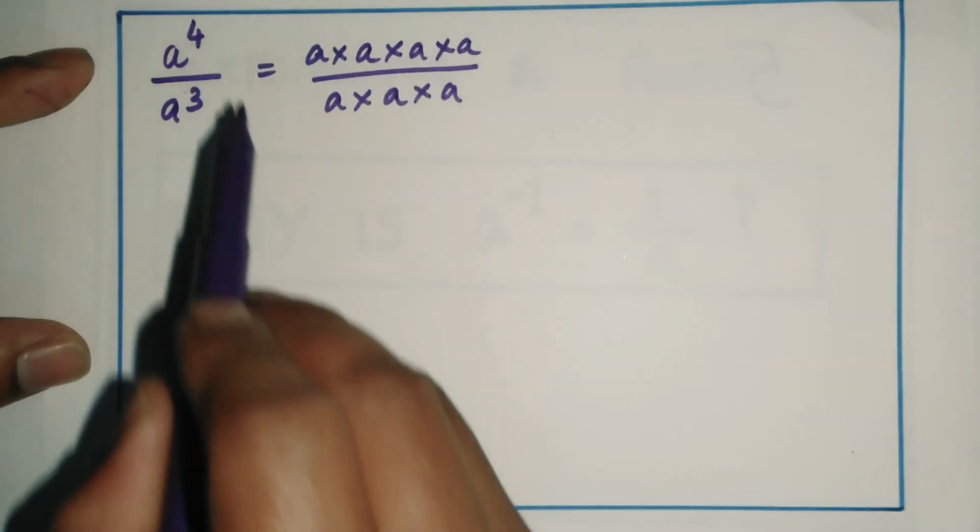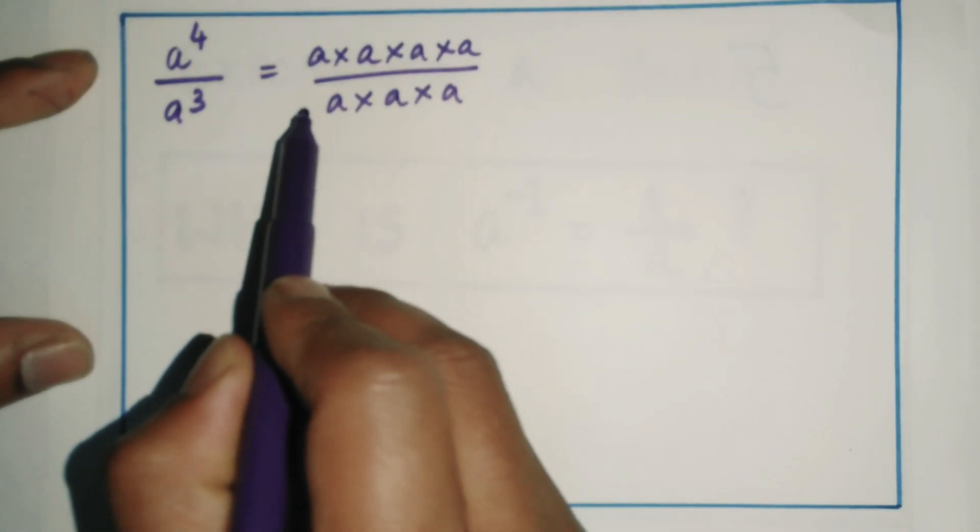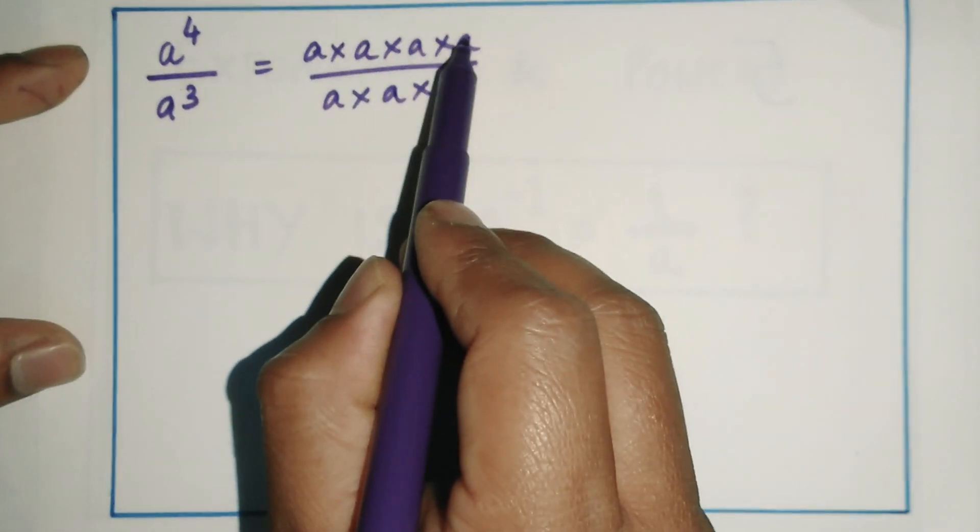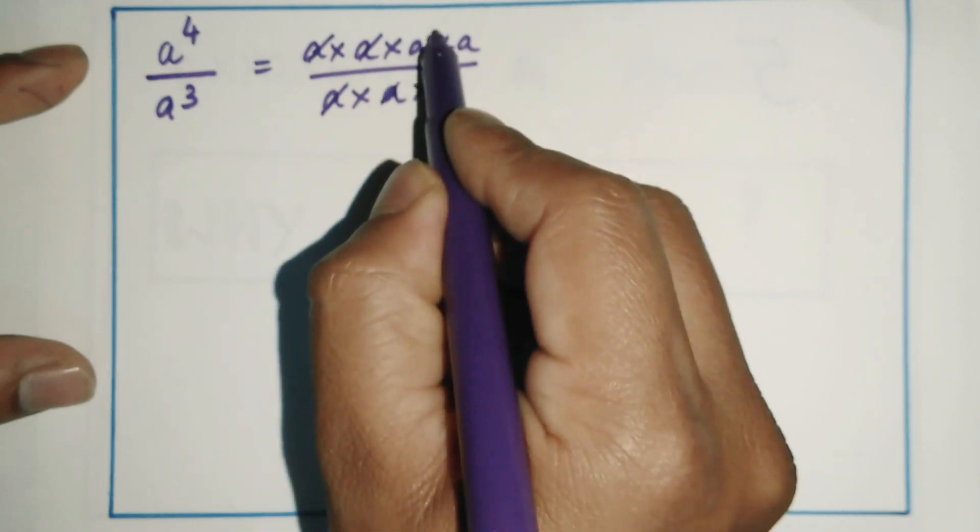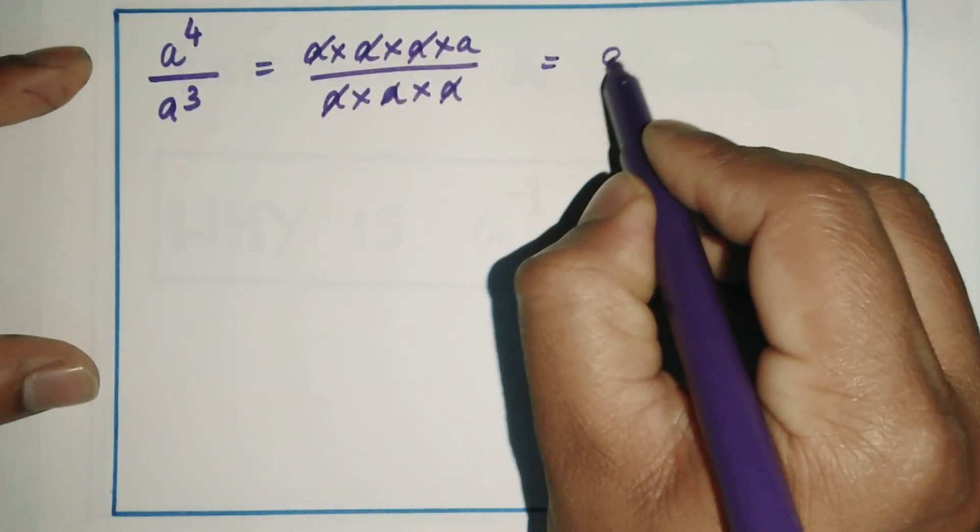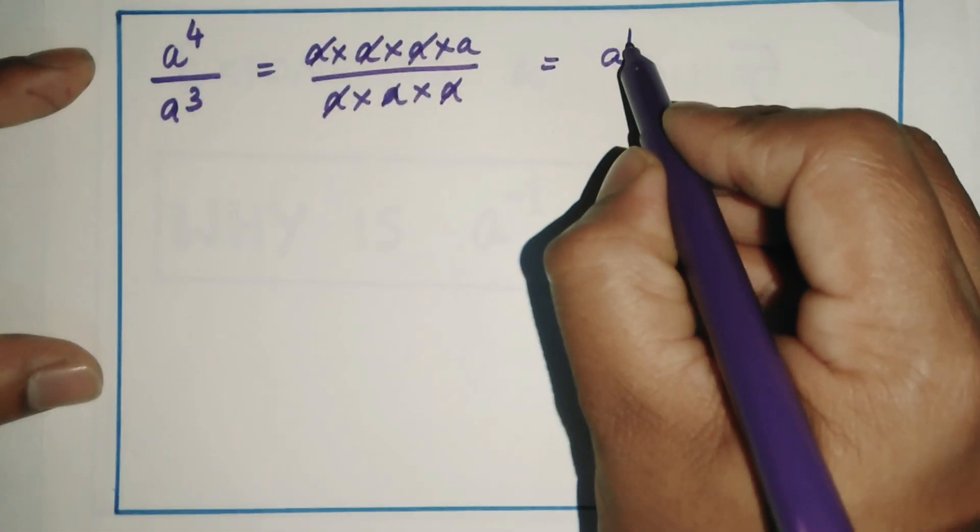If you observe the numerator and denominator, I have more a's in the numerator than in the denominator. Upon cancellation of the respective a's, I get one a in the numerator, which is a^1.